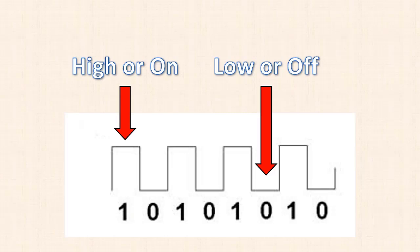On or off, or high or low, and they mean the same thing. So a high is a logic 1, and a low is a logic 0, and that's why binary numbers consist of 1s and 0s.